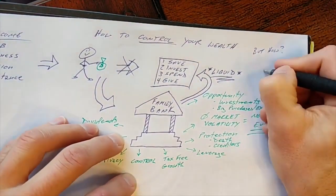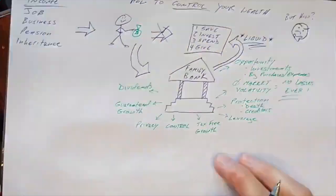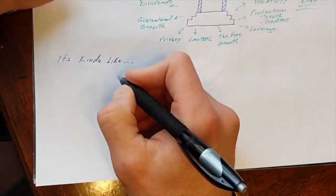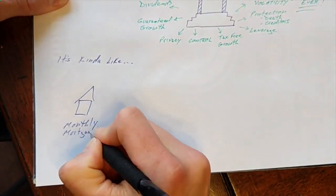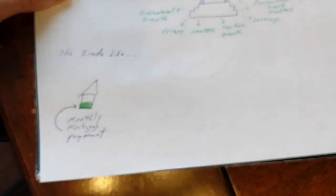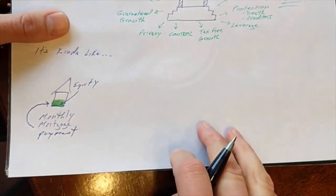Okay, we get that part. But how do we do this? Well, it's kind of like a mortgage. So if you're familiar with homeownership, you understand that you make monthly mortgage payments to the bank. With each payment, a portion of that goes towards the principal balance of the home, and you build equity.